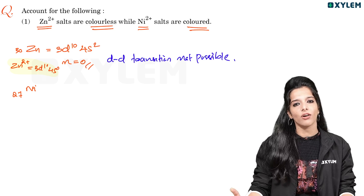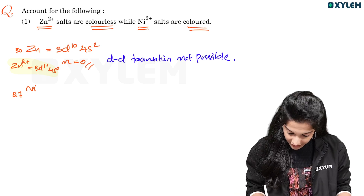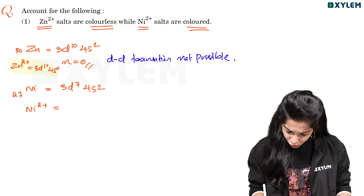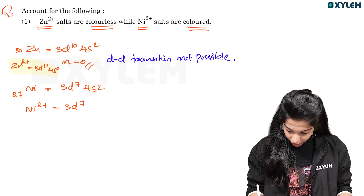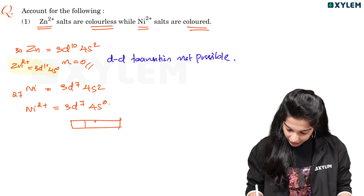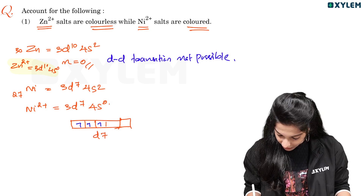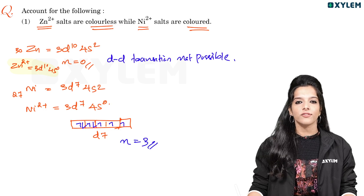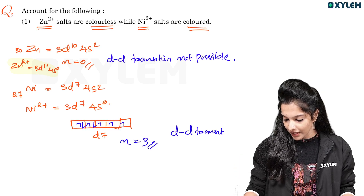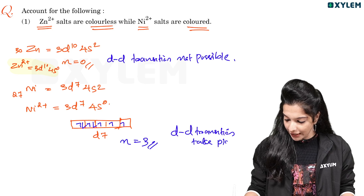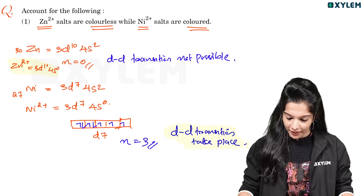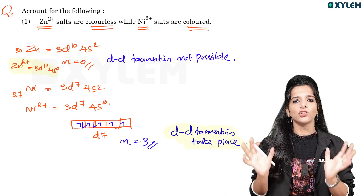For cobalt (27): cobalt is 3D7, 4S2. Co2+ has configuration 3D7, 4S0. In D7, filling the 5 d-orbitals: 1, 2, 3, 4, 5, 6, 7 — n equals 3, meaning 3 half-filled or unpaired electrons. So DD transition is possible. DD transition takes place, making this compound colored.